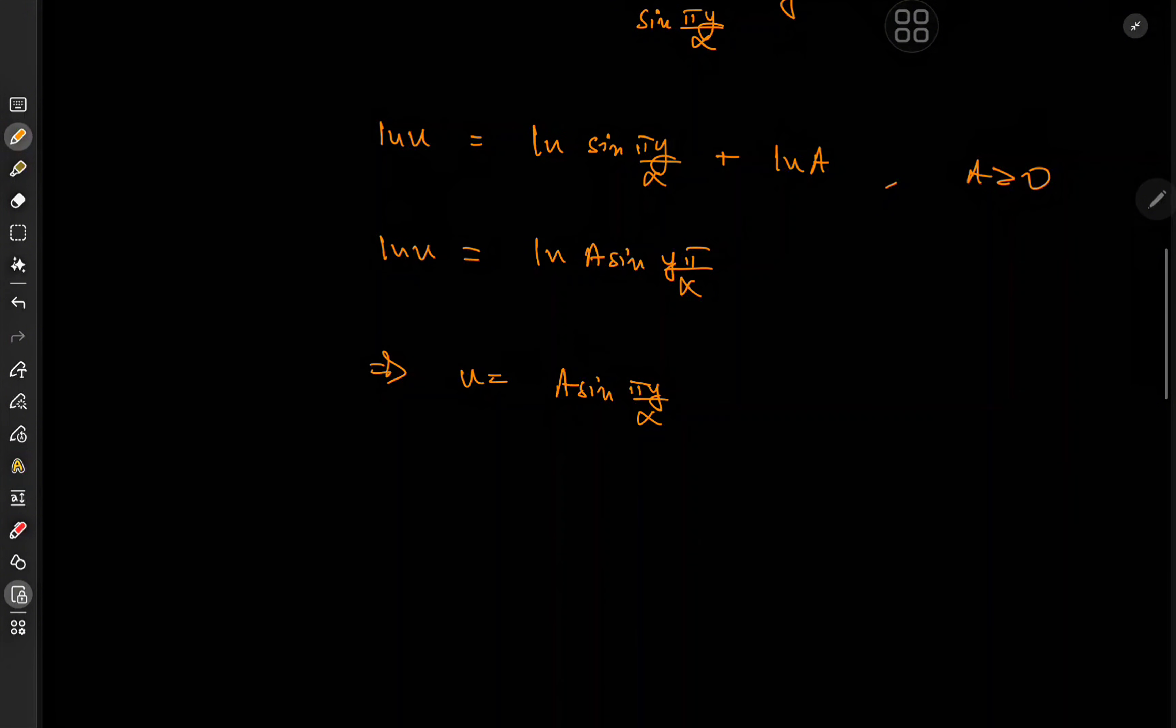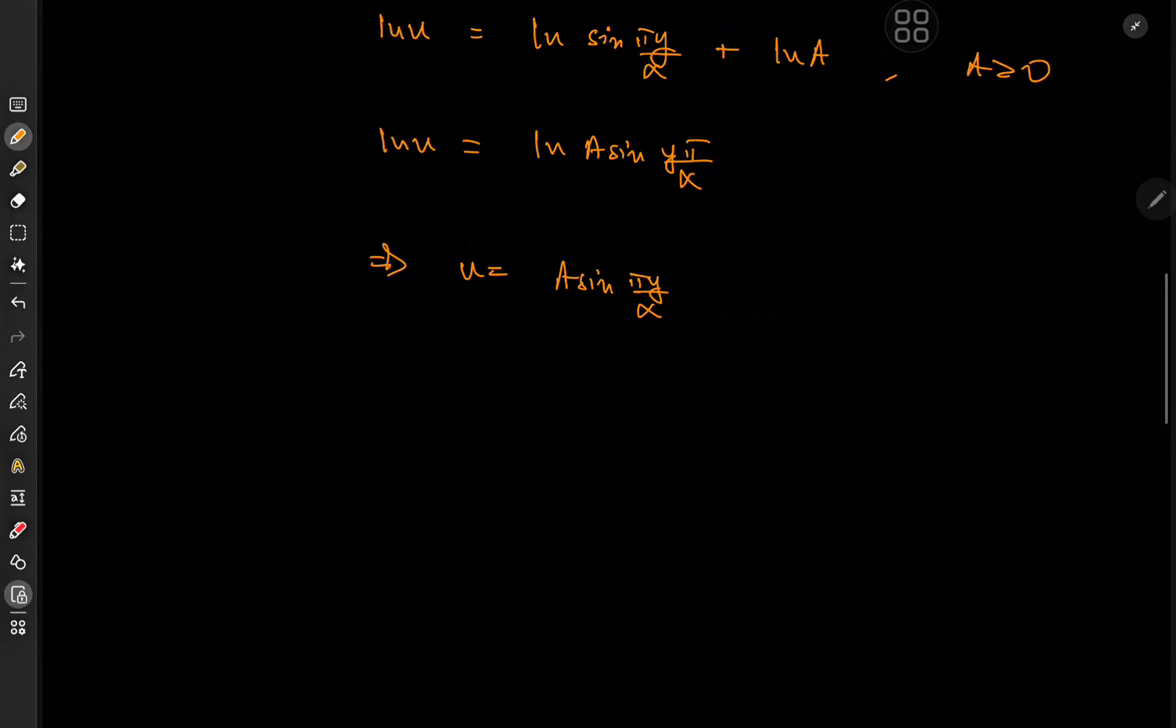Okay cool. That looks quite nice because I now have u in terms of y, but my differential equation actually required y in terms of x, so we still have some work to do. u here is dy over dx, so that means we have a times the sine of pi y over alpha. And this implies that